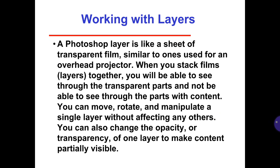A Photoshop layer is like a sheet of transparent film, similar to ones used for an overhead projector. When you stack films or layers together, you will be able to see through the transparent parts and not through the parts with content. You can move, rotate, and manipulate a single layer without affecting any others. You can also change the opacity or transparency of a layer to make the content partially visible.